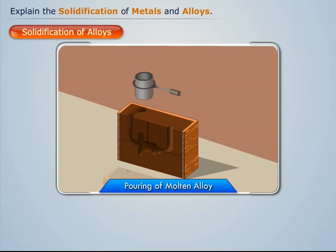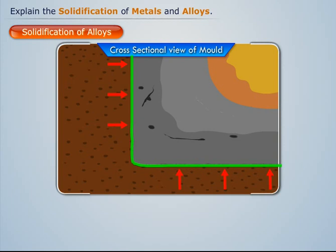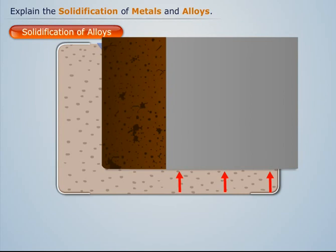Now let's discuss the solidification of alloys. When we pour the molten alloy into the mold, we see that the solidification process takes place in the same manner as in the case of solidification of metals. The only difference is that the crystals formed will have a dendritic structure, as shown.